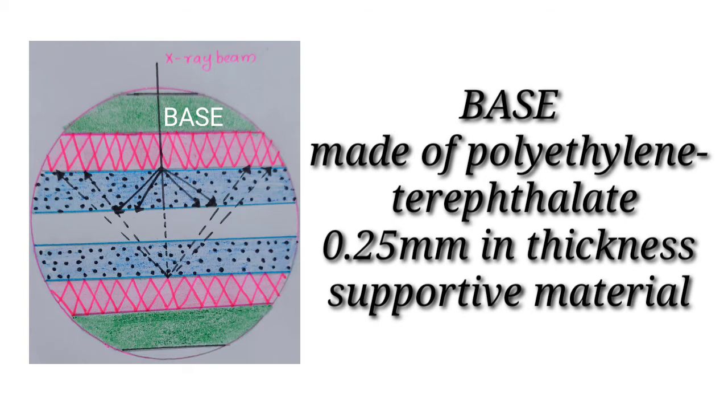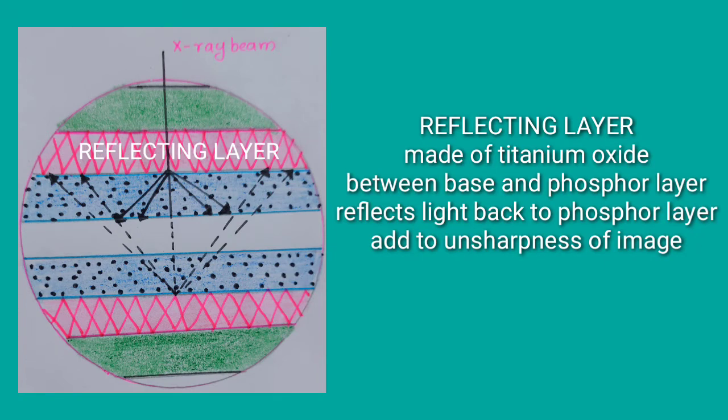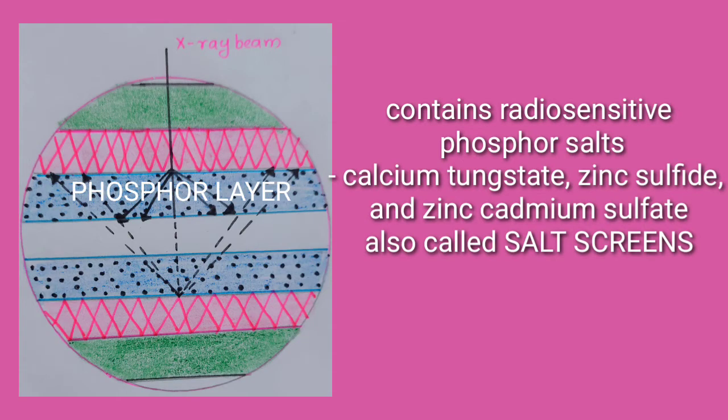The reflecting layer is made of titanium oxide. It is present between the base and the phosphor layer, and it helps to reflect light onto the phosphor layer; however, it may also lead to unsharpness of the resultant image.